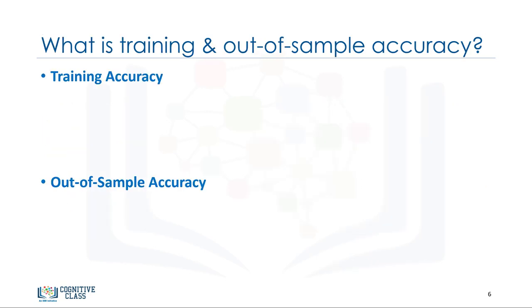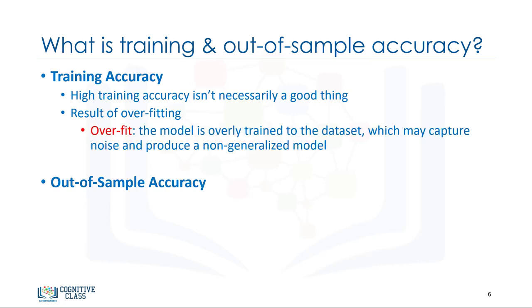What is training accuracy and out-of-sample accuracy? We said that training and testing on the same data set produces a high training accuracy, but what exactly is training accuracy? Training accuracy is the percentage of correct predictions that the model makes when using the test data set. However, a high training accuracy isn't necessarily a good thing. For instance, having a high training accuracy may result in an overfit of the data. This means that the model is overly trained to the data set, which may capture noise and produce a non-generalized model.